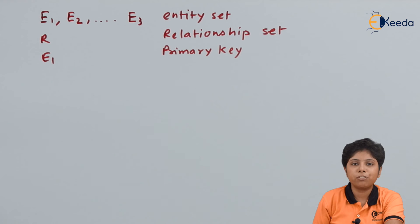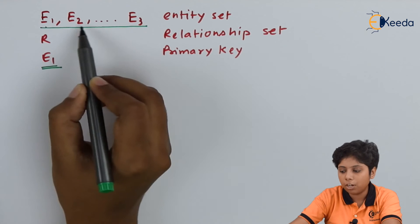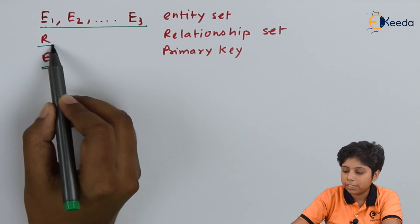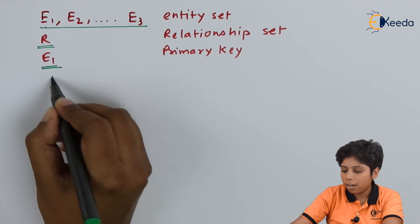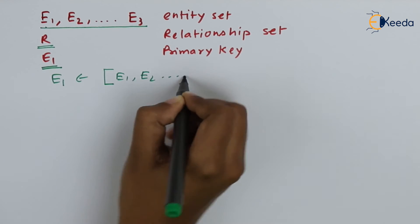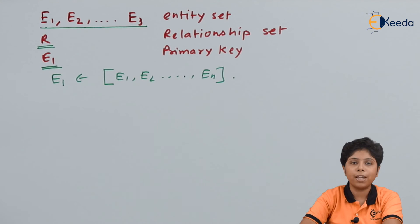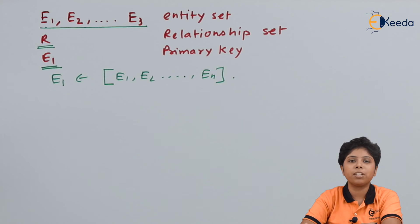Formally, given an entity set E1 from a collection E1, E2, ... En with a relationship existing in relationship set R, E1 must belong to the set of all entity sets. If the primary keys of each entity set are different, we take the union of all of them to formally define the primary key of a relationship.